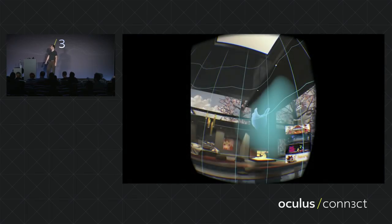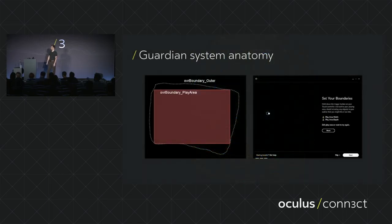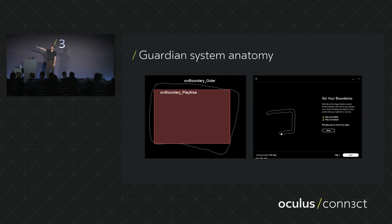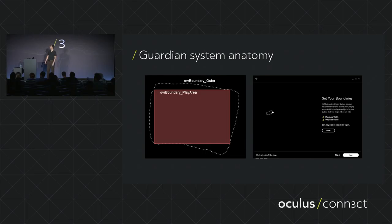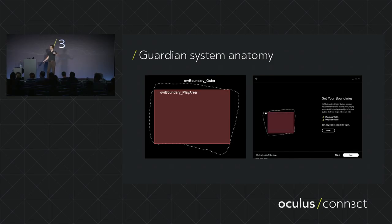Next topic: the guardian system. This implements a boundary around you. There are two types of boundaries: an outer boundary, which is what the user scribes with the touch controller during setup and can be an arbitrary shape, and a play area boundary, which is an axis-aligned bounding box within that outer area. The play area is normally the area your application should work within. The boundary system itself, when shown on screen, displays the outer boundary.